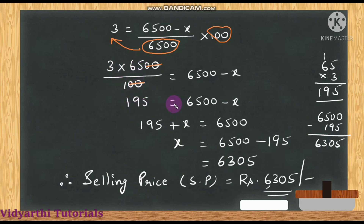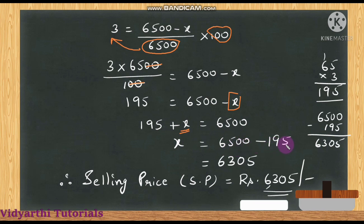So 195 = 6500 − x. Moving −x to the other side gives +x, so 195 + x = 6500. Moving 195 across gives x = 6500 − 195, and 6500 − 195 = 6305. So x = 6305.